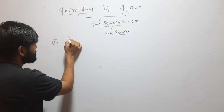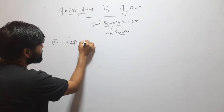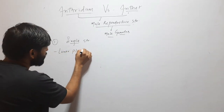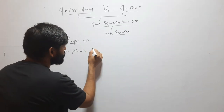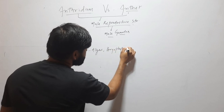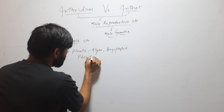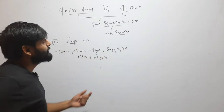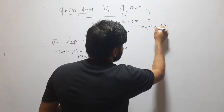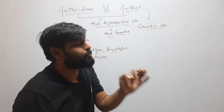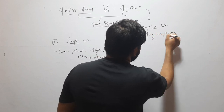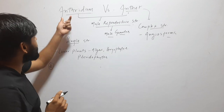The first difference is that antheridium is a very simple structure that is found in lower plants — for example, algae, bryophytes, and pteridophytes. The anther, on the other hand, is a very complex structure that is found in higher plants, that is, angiosperms.